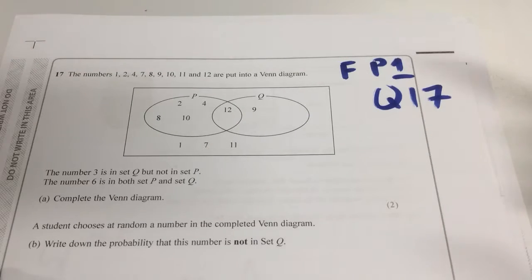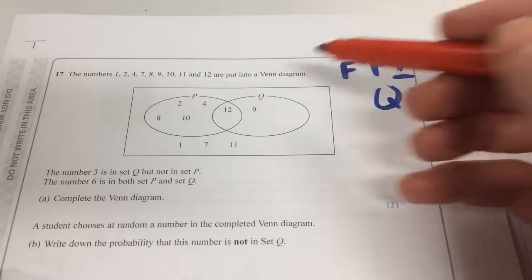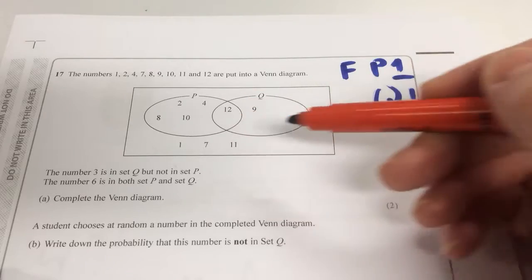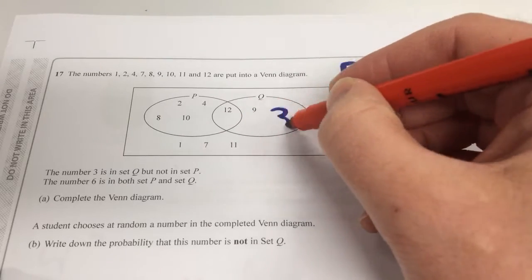Where do I put the 3? In Q. So in the big circle for Q or the smaller part that overlaps? No, the big circle. Big part there. Okay.